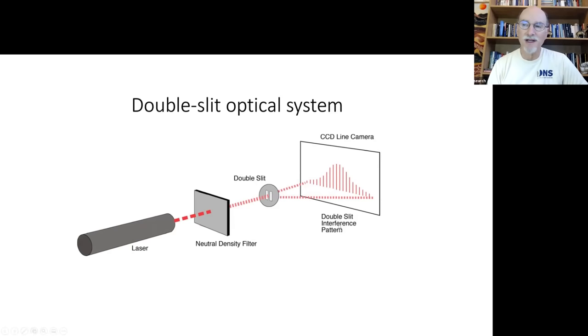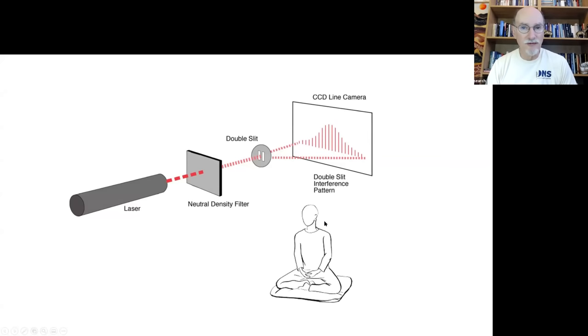So what we did to test this general idea was to use a double-slit optical system. It's a very simple optical setup. And it's an easy way to demonstrate something about the nature of mind-matter interaction at this scale. So this is all you need, a laser, a filter to cut down the intensity, a double-slit, and then some kind of a camera or a screen to look at the interference pattern.